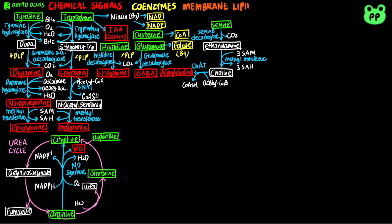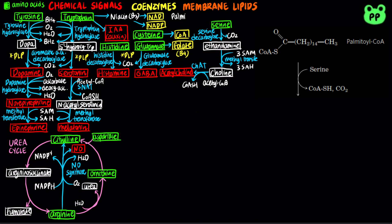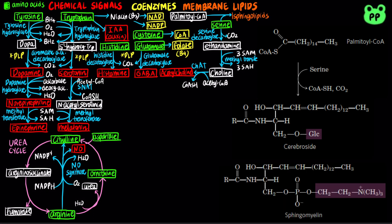Many membrane lipids are derived from serine. Serine combines with palmitoyl-CoA to form sphingolipids such as gangliosides, cerebrosides, and sphingomyelin.